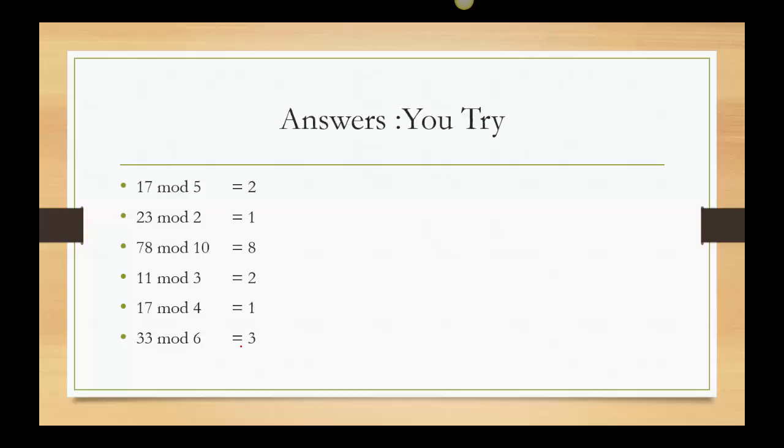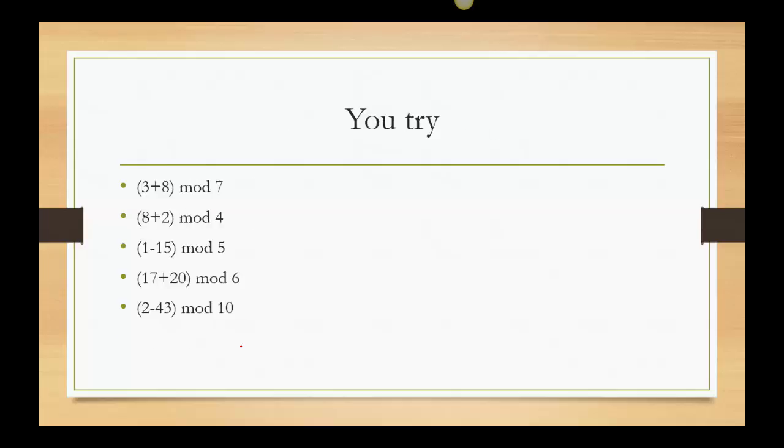Okay. So let's start with the 17. 17 mod 5. Easy. That's just 2. Right? Remember we talked about how many ones would we have to give. 23 mod 2. Remember with 2, you're thinking even or odd. 23 is odd. So my answer is 1. 78 mod 10. With mod 10, I can just look at the ones unit. So that gives me 8. 11 mod 3. So you could be thinking 3, 6, 9. So 9 is close to 11. 11 minus 9 is 2. With 17 mod 4, I'm thinking about the number 16 as a multiple of 4. So 17 minus 16 gives me 1. And with 33 mod 6, I'm thinking about the number 30. 30 being a multiple of 6. And then 33 minus 30 gives me 3.